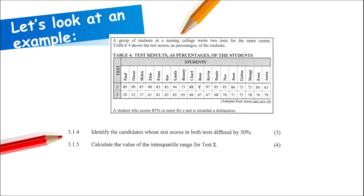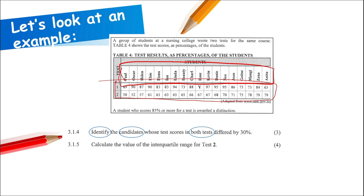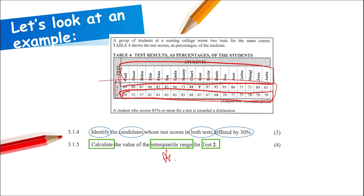Another example: a table is given and the question says 'identify the candidate whose test scores in both tests differed by 30%' — so we look at both sets of data. The next question says 'calculate the value of the interquartile range for test two' — so we only look at that part. Approaching questions carefully helps you know exactly how to answer them.